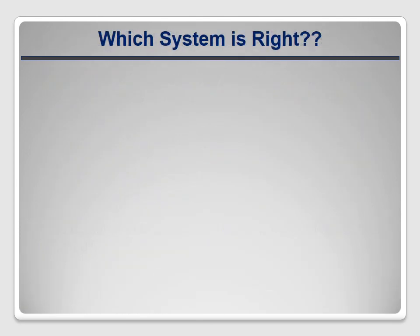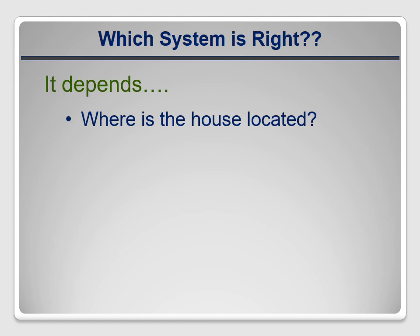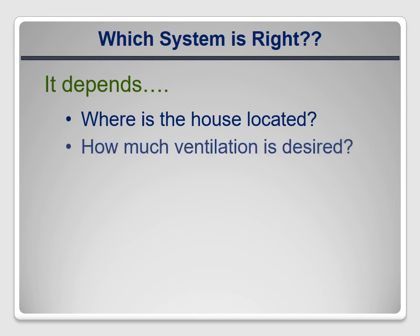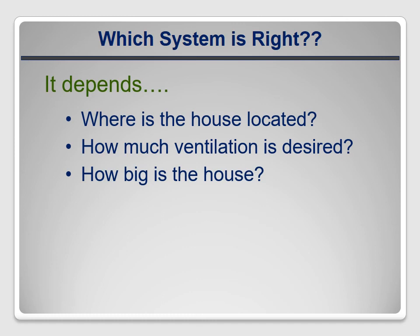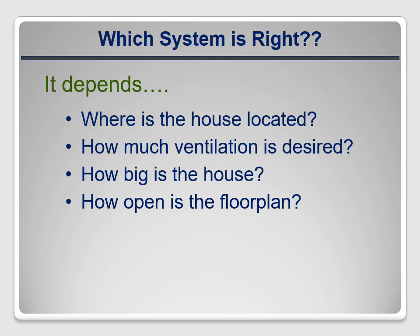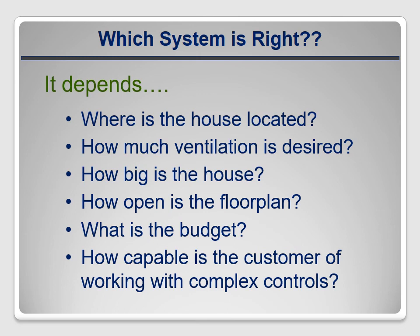So how do you decide which system is right for your customers? Well, it depends. The location of the house is important — because of potential moisture issues, exhaust-only systems are better than supply-only systems in cold climates, but the opposite is true in warm, humid climates. Another consideration is the amount of ventilation needed. If it's really high, an HRV may make sense to reduce the energy penalty. If the house is big, a system with multiple supplies or intakes probably makes sense to ensure that the whole thing gets fresh air. But if it's small and the floor plan is very open, then a single supply or intake will probably be adequate. Of course, you have to consider the available budget. And finally, think about the controls and whether the specific customer will be willing and able to understand and use them. If you design the system well, it will provide the customer with healthy air for a long time.